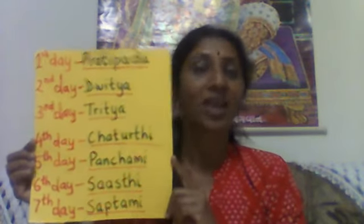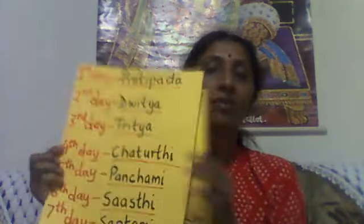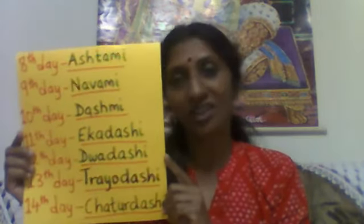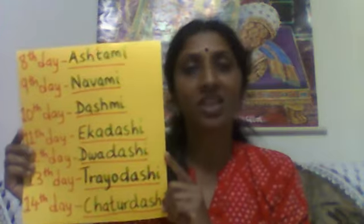Let's go back to the fifteen days of the fortnight once more and then end today's session. Pratipad, Dvitiya, Tritiya, Chaturthi, Panchami, Shashti, Saptami, Ashtami, Navami, Dashami, Ekadashi, Dvadashi, Trayodashi, Chaturdashi — and the fifteenth day has two varieties: Purnima for the bright fortnight and Amavasya for the dark fortnight.